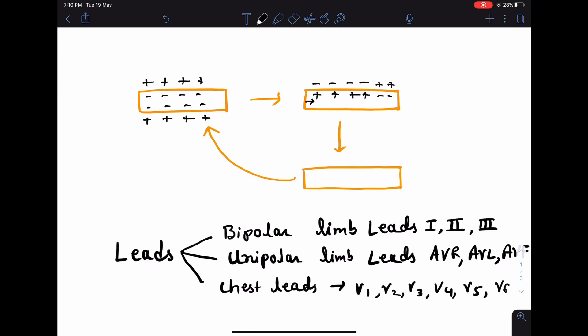Once the muscle is depolarized, it comes back to its normal resting state, and this phase is known as repolarization. During repolarization, the outside of the cell becomes positive, inside becomes negative. The arrow shows the direction of repolarization. And finally, it comes back to the polarized state.